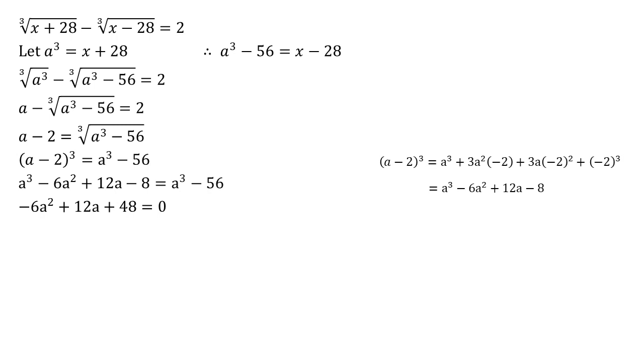All of those terms are multiples of six. As the a squared coefficient is a negative, if we divide through by negative six, then we'll end up with a positive square, which is that little bit easier to look at.